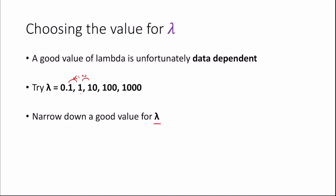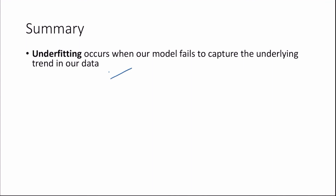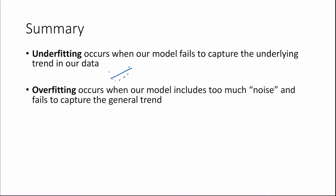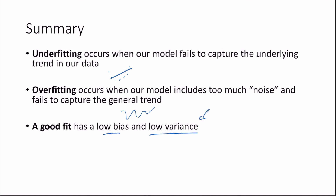In summary: underfitting occurs when our model fails to capture the underlying trend in our data — as seen with the linear model failing to recognize the bowl-shaped trend. Overfitting occurs when our model includes too much noise and fails to capture the general trend — like the spaghetti model fitting data too closely and performing poorly on test data. A good fit has both a low bias and a low variance. We looked at how to reduce both, including regularization, which reduces our model's variance by reducing parameter values.